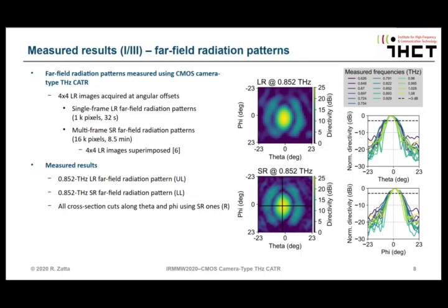Here you see the measured far-field radiation patterns. We measured 4×4 low-resolution images acquired at angular offset, since the camera was mounted onto a robot arm. A single frame corresponds to a single low-resolution far-field radiation pattern with 1,000 pixels measured in 30 seconds. The super-resolution far-field radiation pattern contains information from all 4×4 low-resolution images. This was done for 15 frequencies, so we measured 15×4×4 images.